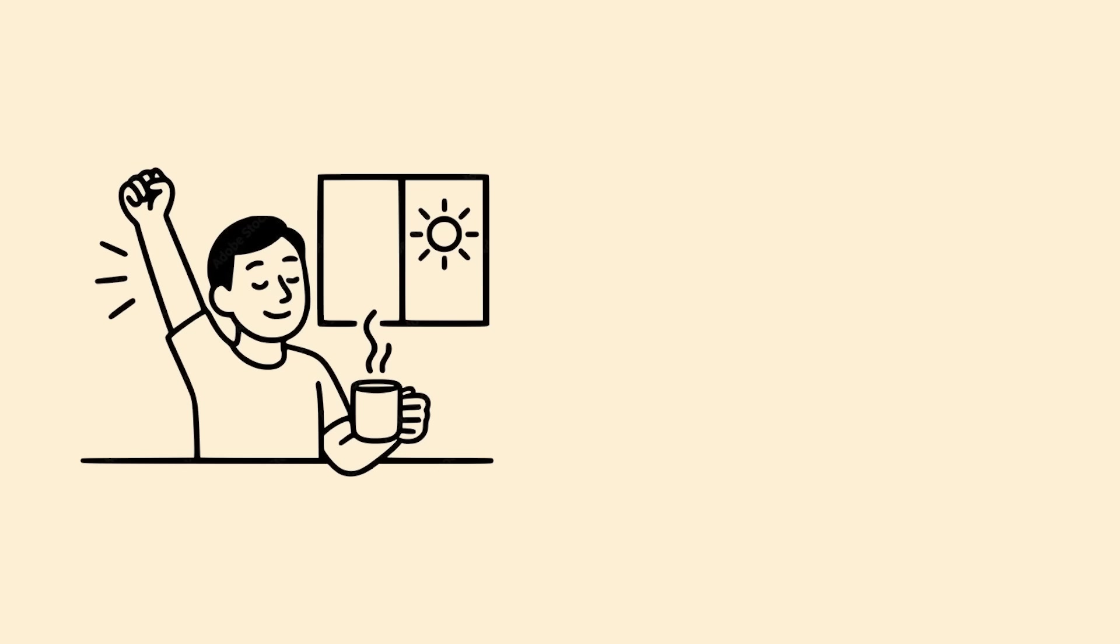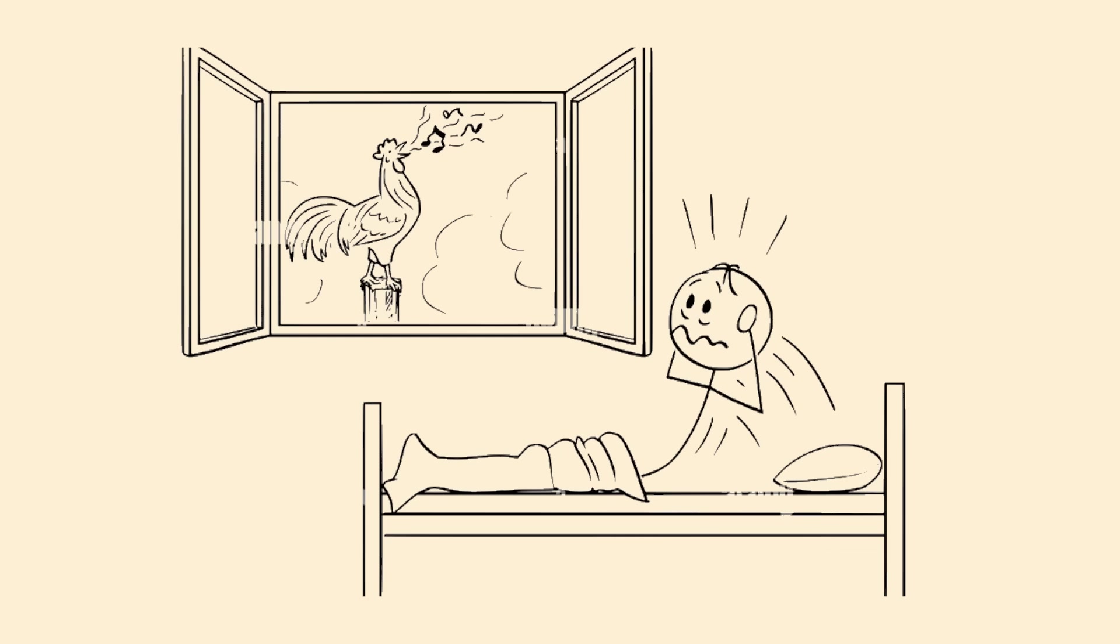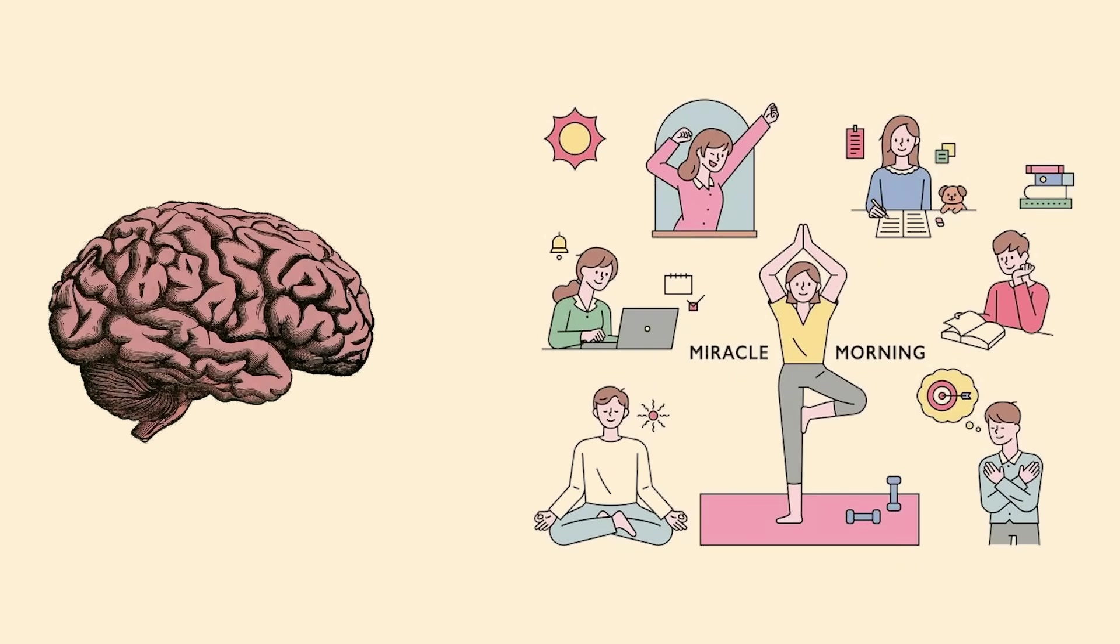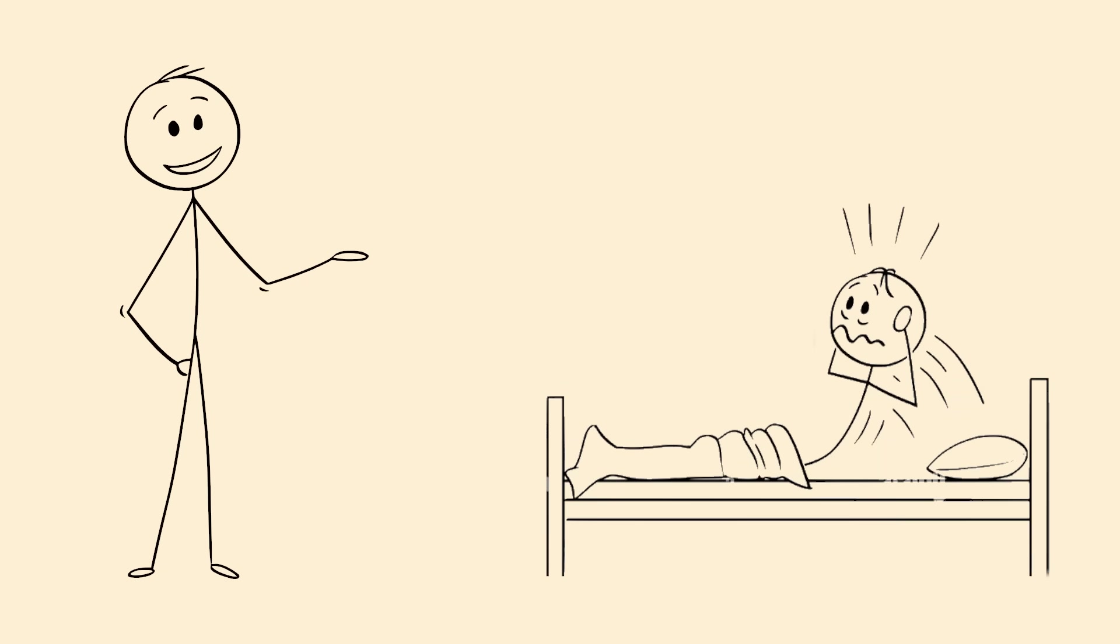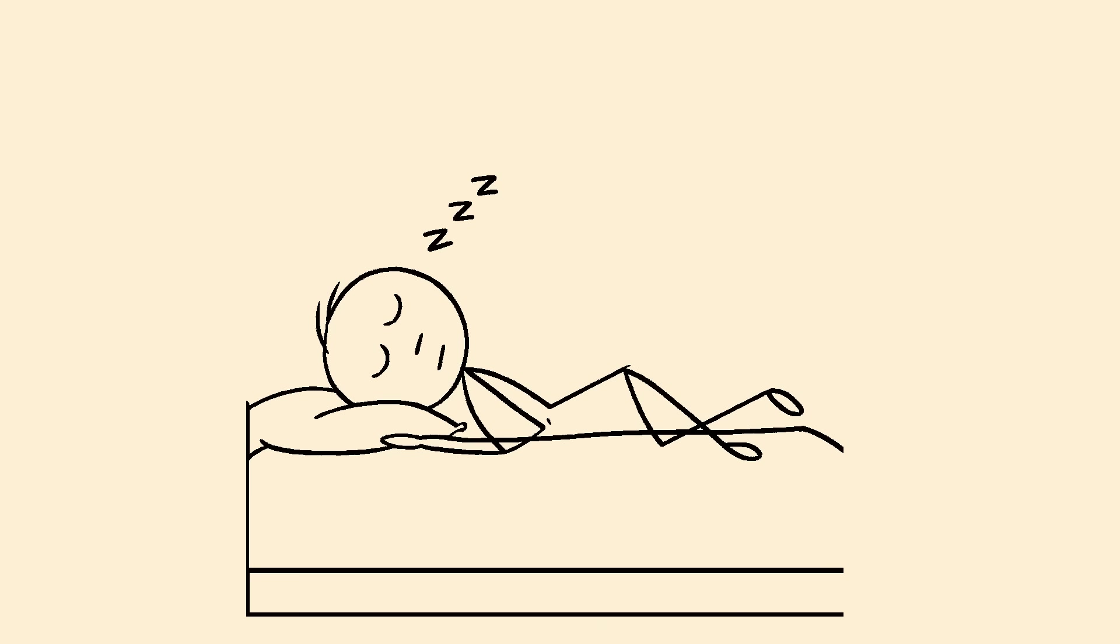False Awakening. You wake up, get dressed, brush your teeth, maybe even drive to work. Then you actually wake up and realize it was all a dream. False awakenings happen when your brain rehearses your morning routine while still dreaming. Sometimes these can chain together where you wake up multiple times before really waking up. Your sleeping brain is so good at predicting your routine that it creates a perfect simulation. It's like your mind is running a rehearsal for the day while you're still unconscious.